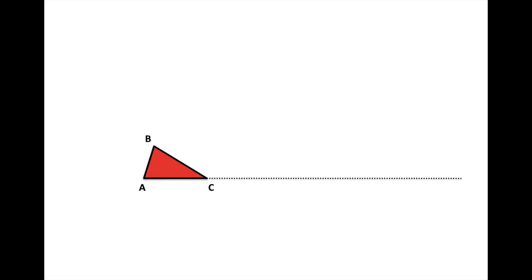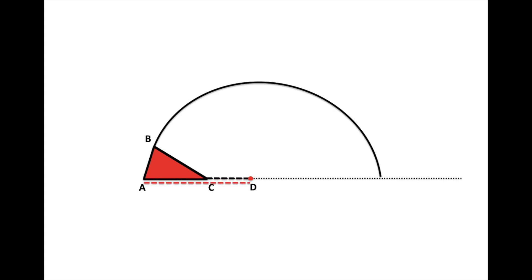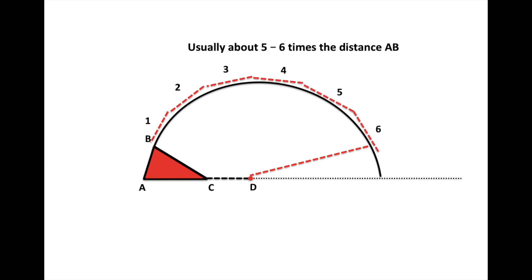Once the lesion and the triangulated marking have been excised, this is the defect for which the rotation flap is planned. The side opposite the apex of the triangle — side AB — is measured. A line CD, equal in length to AB, is marked on the extension of side AC, so AB equals CD. Point D is not the pivot point but the center of arc of rotation. With D as the center and the distance AD as the radius, an arc is drawn from point B. This arc must be about five to six times the distance AB to be able to rotate and cover the defect.